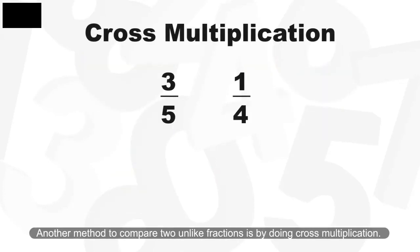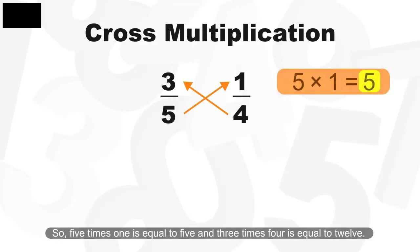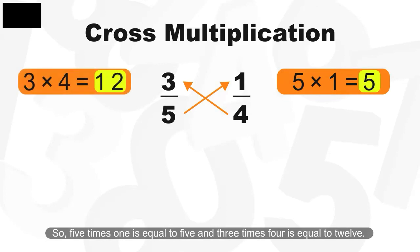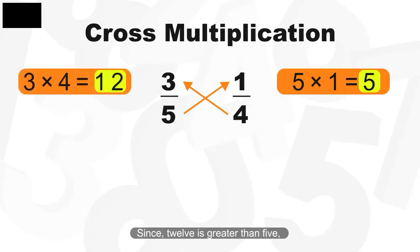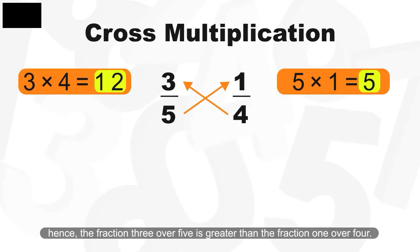Another method to compare two unlike fractions is by doing cross multiplication. So 5 times 1 is equal to 5 and 3 times 4 is equal to 12. Since 12 is greater than 5, hence the fraction 3 over 5 is greater than the fraction 1 over 4.